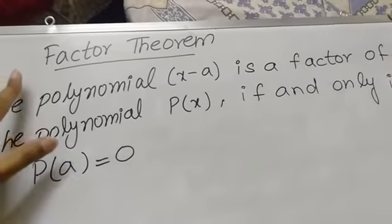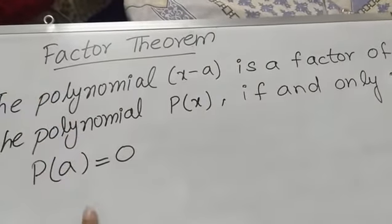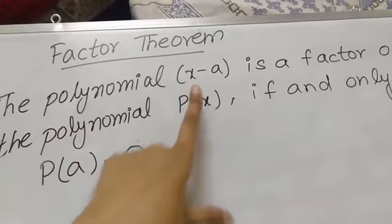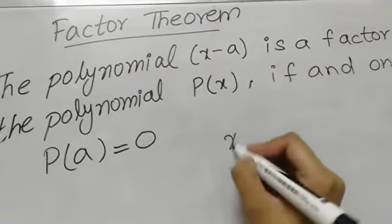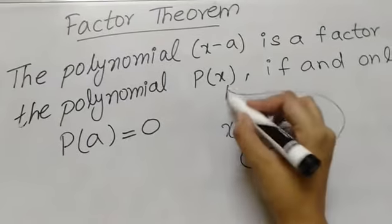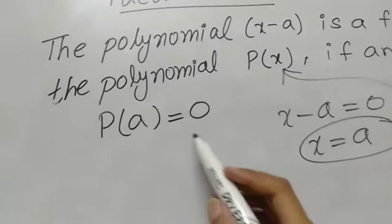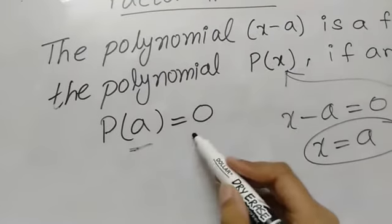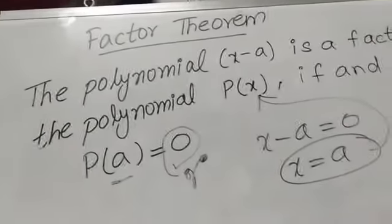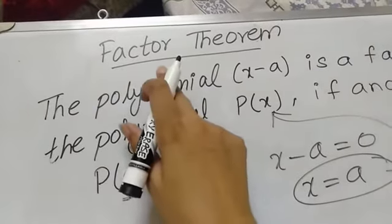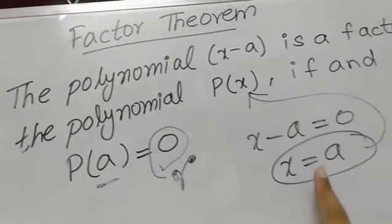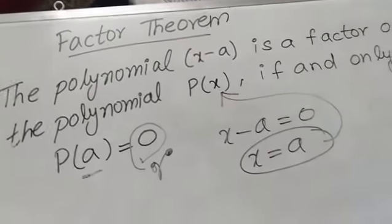In the factor theorem, we will always evaluate p of a — that means the polynomial — when we put the value of x. Like when we take x minus a equals to 0 and we get x equals to a, we put that value of x in our polynomial. If after putting the value of x we have 0 as our remainder, then this is the factor theorem. The factor theorem tells us that the remainder is always equal to 0 when we put our value of x in the polynomial. So this is the whole factor theorem.